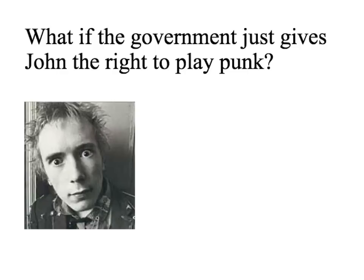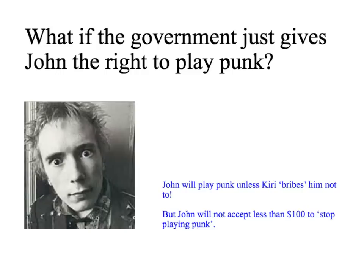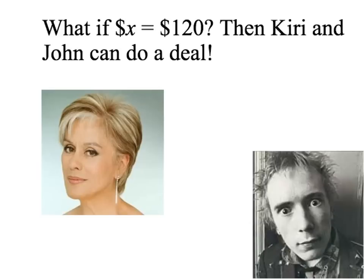Is there a simpler solution? Yes. Suppose the government just gives John the right to play punk — a property right. He's allowed to play punk unless somebody pays him not to. John gets $100 per day value from playing punk, so he will not accept less than $100 to stop. Let's suppose that X is $120 — in other words, Kiri gets $120 negative externality per day when John plays punk.